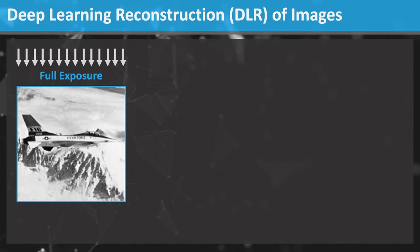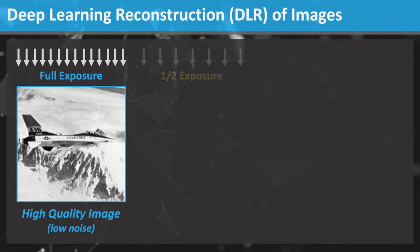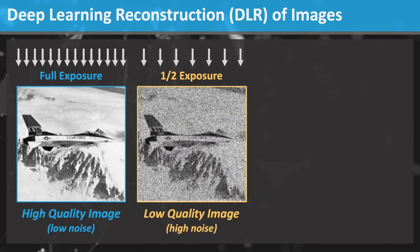Let's specifically talk about deep learning reconstruction, or DLR, of images. Here we have a full exposure photograph of an F-18 jet in flight with mountain terrain in the background. This is a high quality image with low noise generated using routine image processing techniques. If we only use half the exposure and the same routine image processing techniques, we obtain a low quality image with high noise.